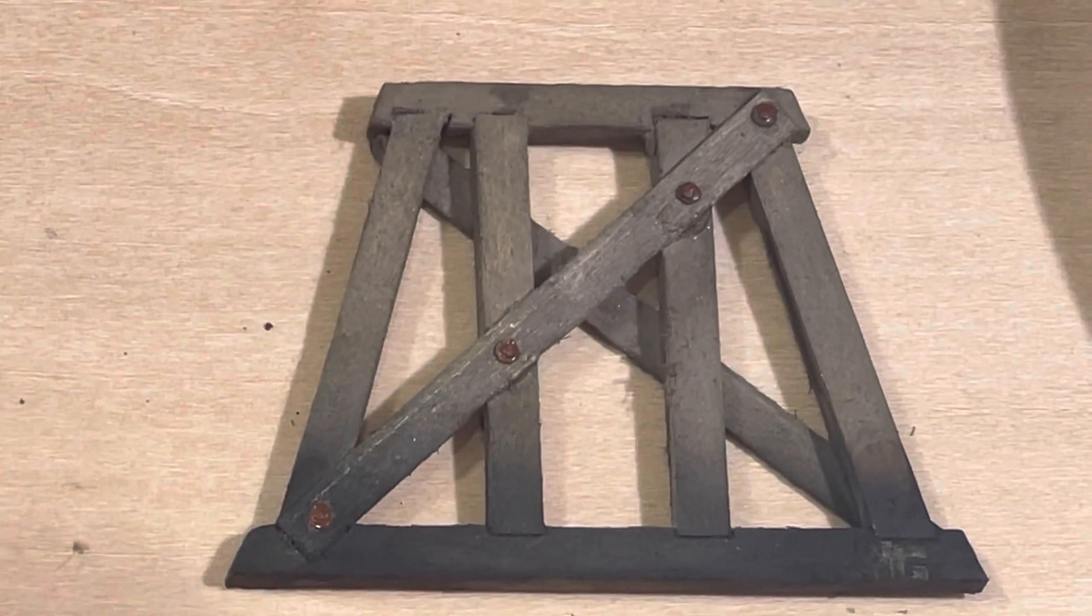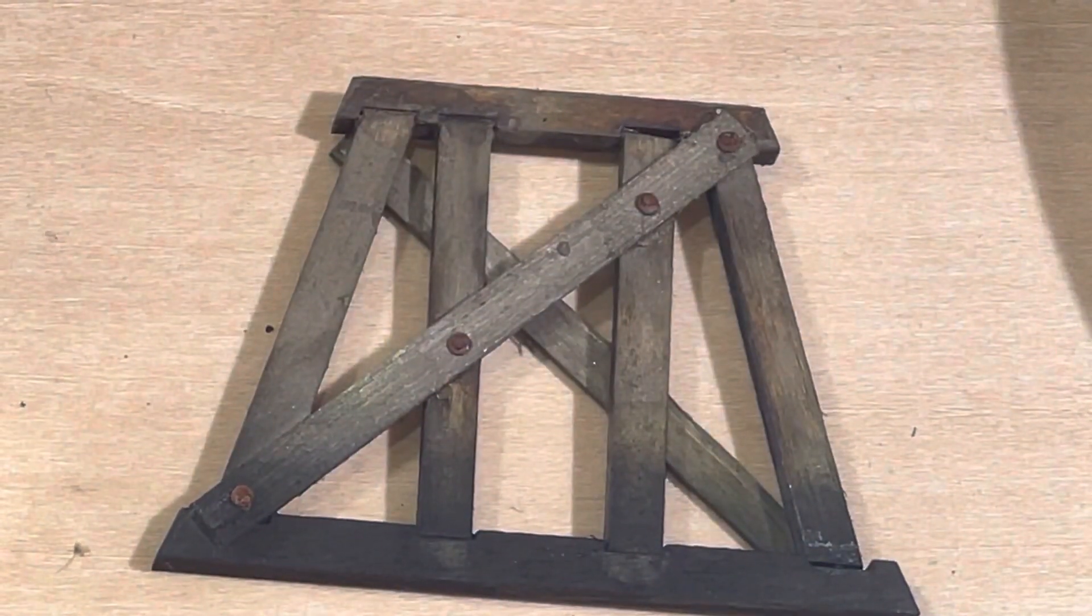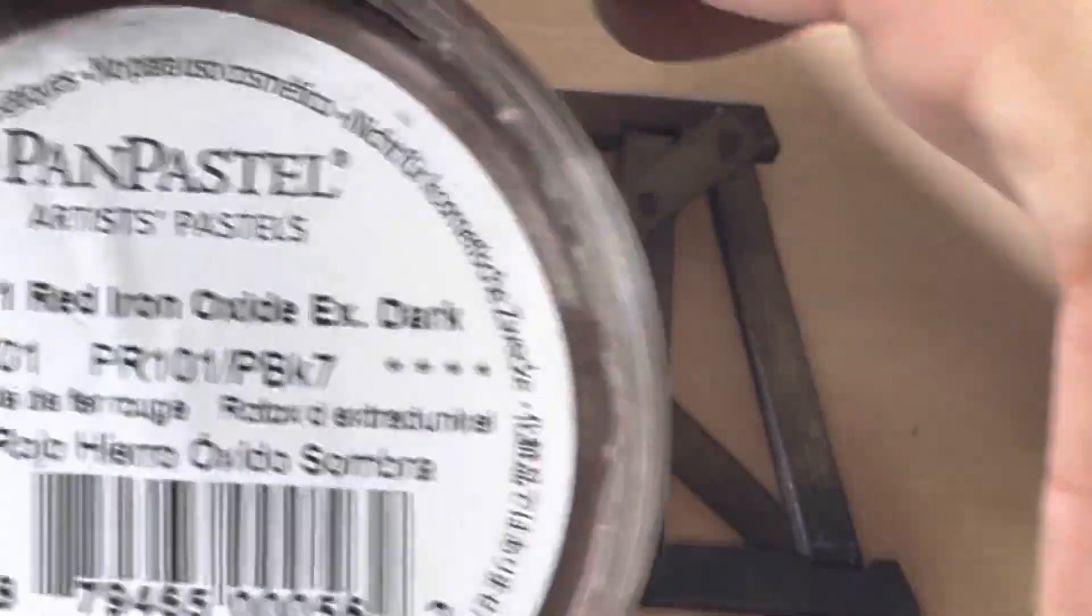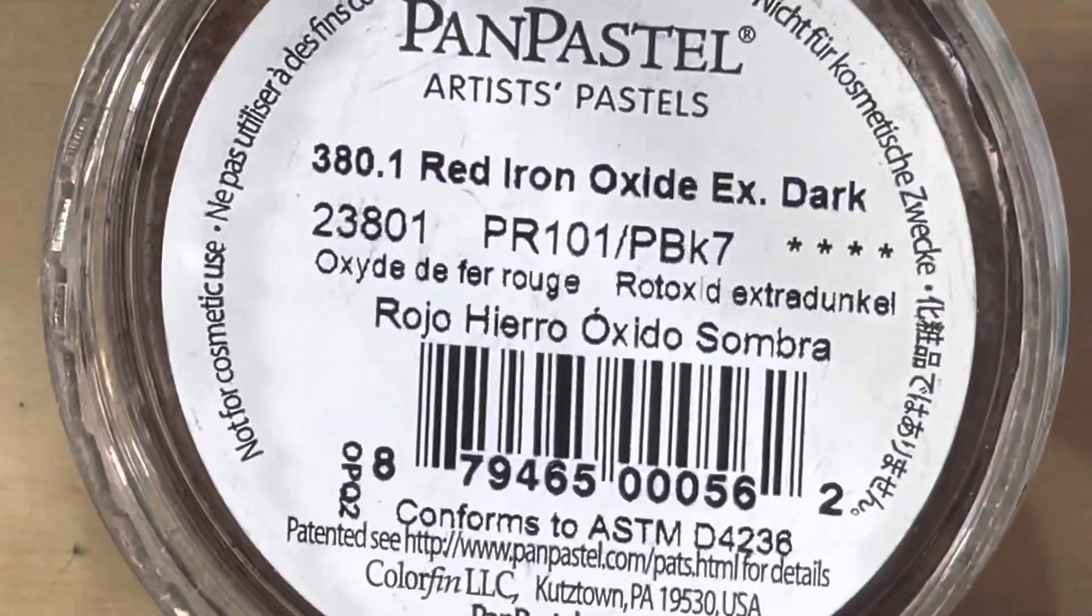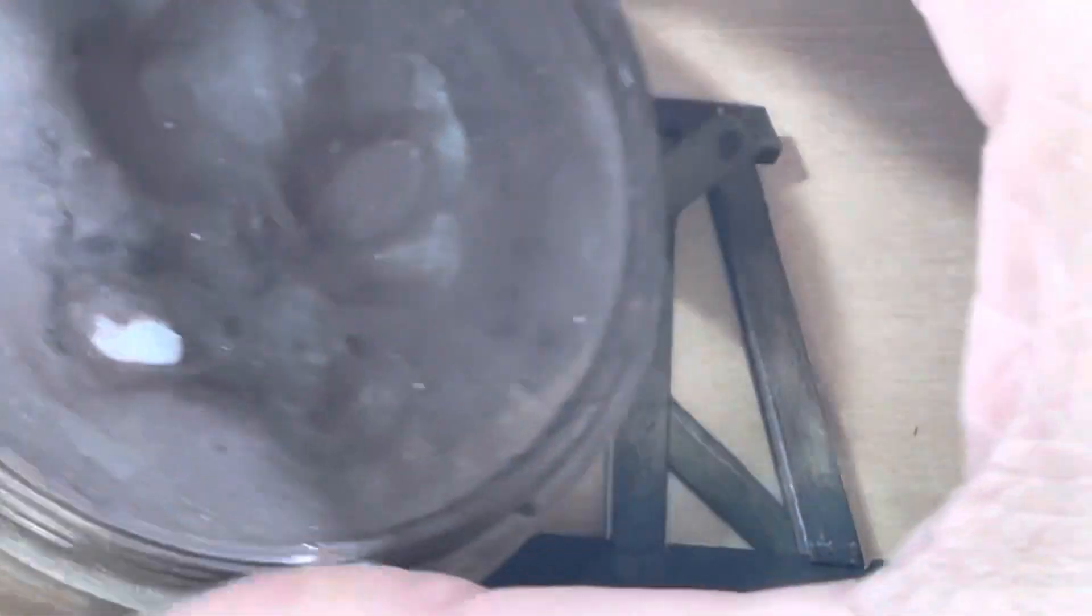When that paint's dried, like with this piece here, I get my—I love this stuff—this is Pan Pastel, Pan Pastel Red Iron Oxide Extra Dark. It's got that beautiful little purple in it that you see in old rust.